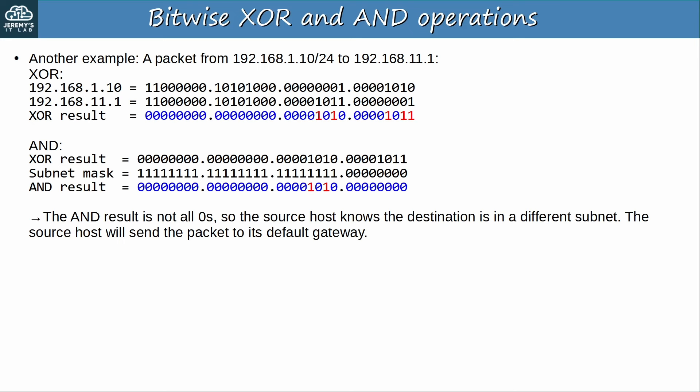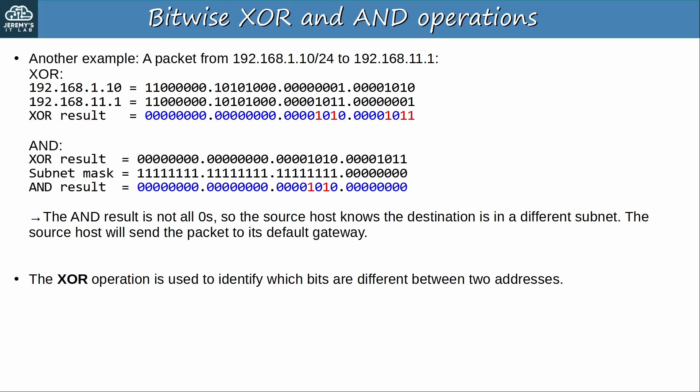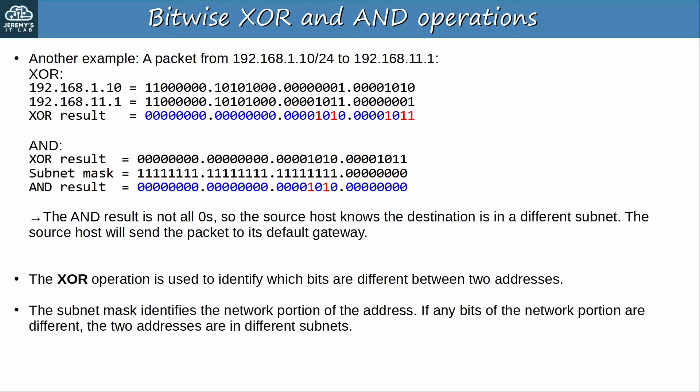To summarize these operations: XOR is used to identify which bits are different between two addresses. The subnet mask identifies the network portion of the address, and if any bits of the network portion are different, the two addresses are in different subnets — that's what the AND operation determines. If the different bits are only in the host portion, it doesn't matter — the hosts are in the same subnet. However, if the different bits are in the network portion, the hosts are in different subnets. That's all we'll cover about XOR and AND operations.